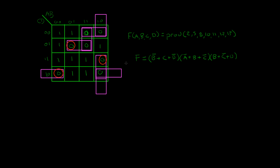The only two zeros we haven't taken care of are the two up here, so I'm going to use the horizontal pair right there. We look up and find that A is one, giving us A-not. We look over and see C and D are zero, so those just stay as-is. And this is your product of sums.